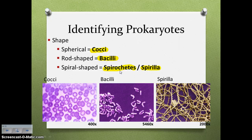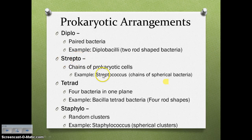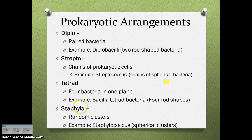You also have different arrangements of those bacterial cells. If they are paired together, you use the prefix 'diplo,' meaning two — so diplobacilli would be paired, rod-shaped bacteria. The prefix 'strepto' means chains, so streptococcus would be chains of cocci — spherical bacteria. Tetrad means four bacteria in one plane, so bacilla tetrad would be four rod-shaped bacteria. 'Staphylo' means random clusters — so staphylococcus is random clusters of spherical bacteria, as in a staph infection.